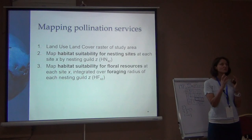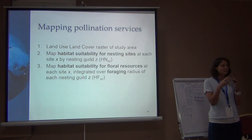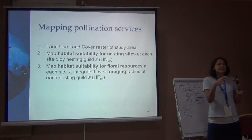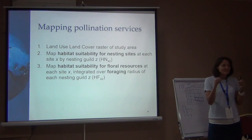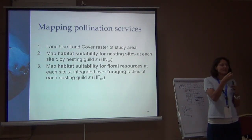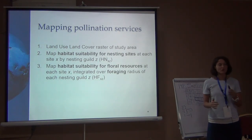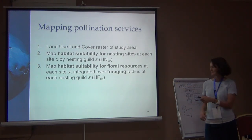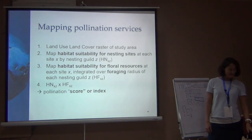If there are floral resources closer, even if they're rated the same — sunflowers closer versus sunflowers further away — you should discount the fact that the bee has to travel so far. So it's not a straight-up mean. Within all those pixels, it applies a distance-weighted function where everything closer to the center cell gets a higher weight than everything further away. That's the integration over a particular foraging radius.